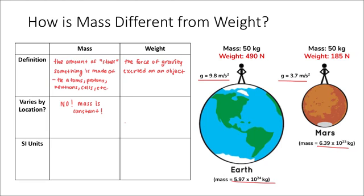...one person with a mass of 50 kilograms on Earth would have a weight of 490 newtons on Earth, but that same person would only have a weight of 185 newtons on Mars. And so we see here that the weight of an object does vary by location. Specifically, it varies by the force of gravity.